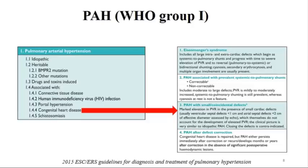When we talk about group 1 PAH, you have different causes: idiopathic, heritable, associated with drugs and toxins, and associated with conditions such as connective tissue disease, HIV, liver disease, portopulmonary hypertension, and congenital heart disease. With congenital heart disease, you can further subclassify into Eisenmenger syndrome, PAH with coincidental cardiac defect, PAH associated with left-to-right shunt, and PAH after defect closure. If the shunt is large with significant QPQS, you can have increased PVR and pulmonary hypertension, then shunt reversal resulting in Eisenmenger syndrome.